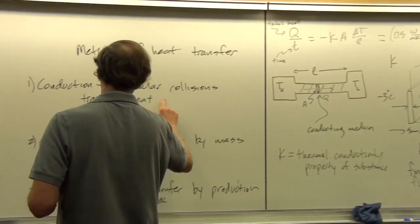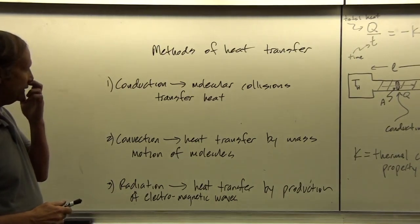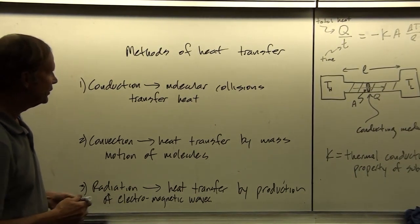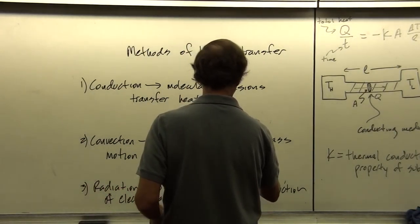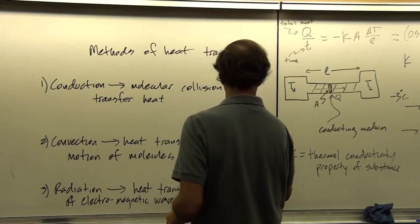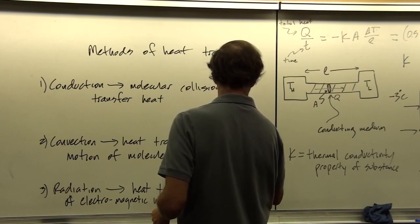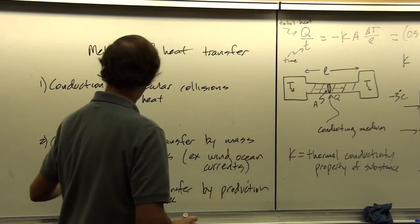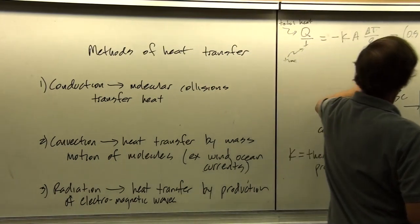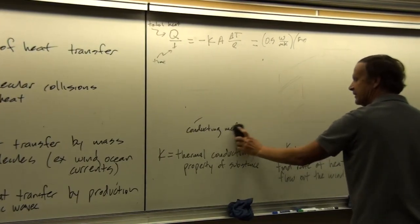That's the idea with conduction. With convection, it's a little different — here we have heat transfer by mass motion of molecules. An example of a convective process would be the wind or ocean currents. There are a lot of weather examples that work nicely to explain this.